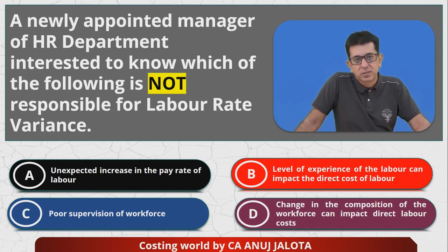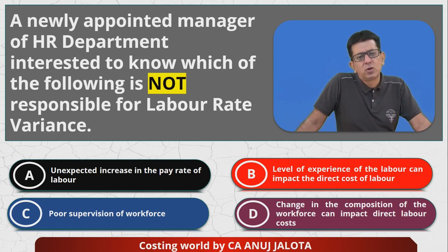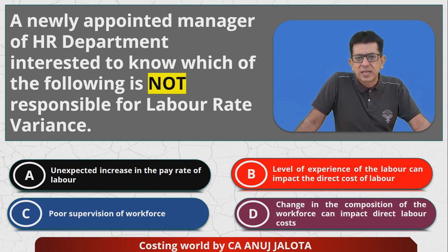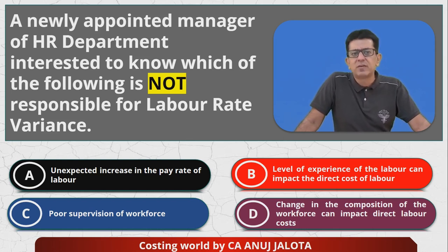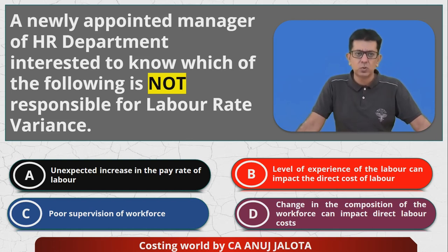Option A: unexpected increase in pay rate of the labor. Obviously, if we increase their rate, labor rate variance will become adverse. So A is indeed a reason for labor rate variance, and therefore A cannot be the answer.